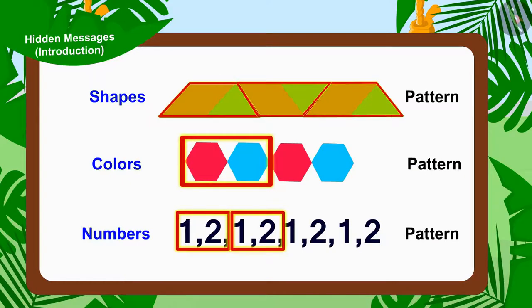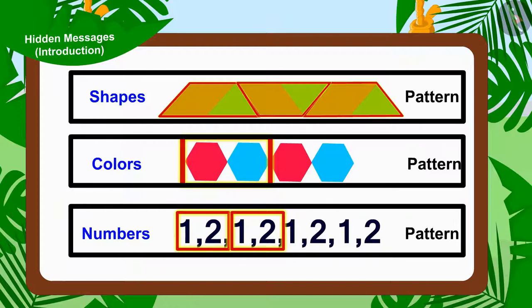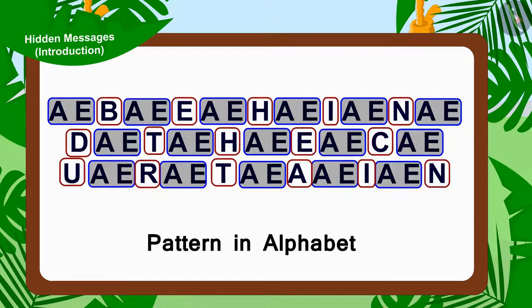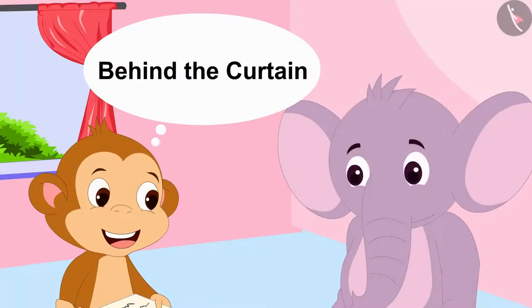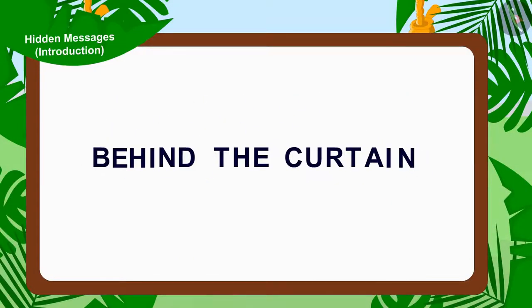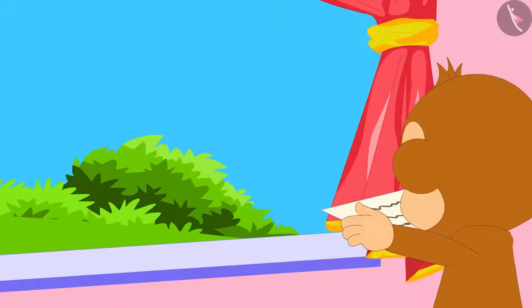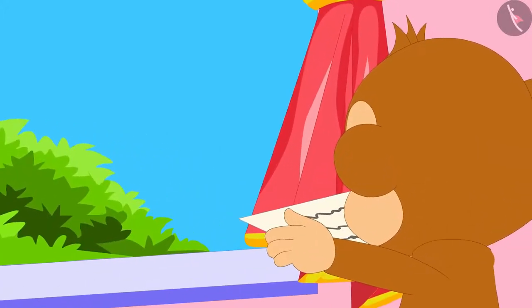Children, the way we saw patterns made of shapes, colors and numbers — in the same way, we can hide various interesting messages by using alphabets. Appu's letter also has a hidden message between the alphabets. Baban, too, like us, understood the message hidden in between the alphabets written in Appu's letter.